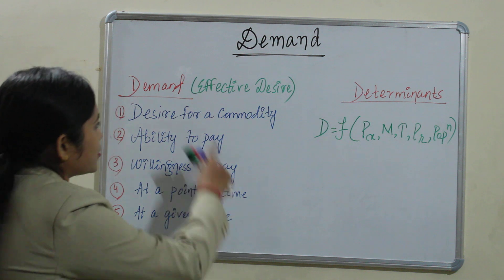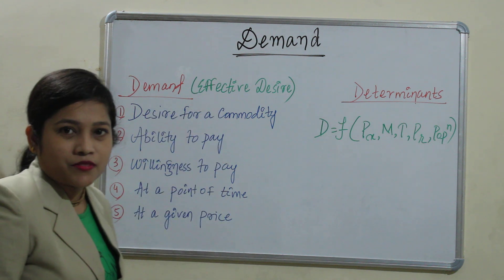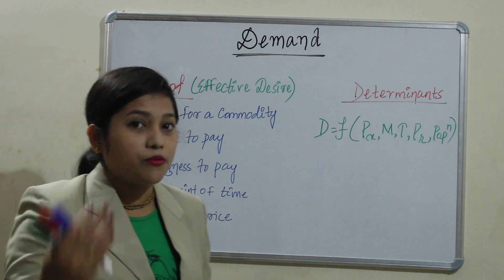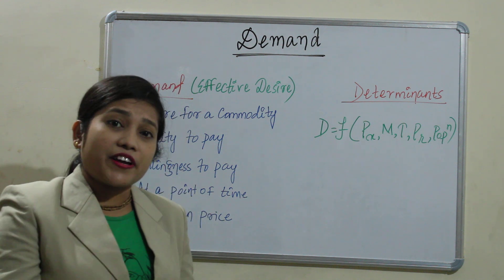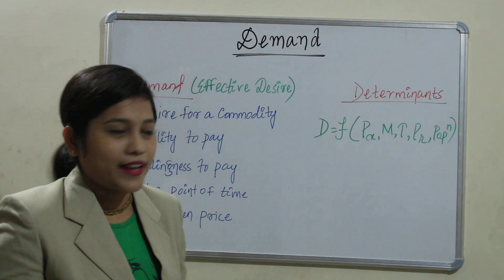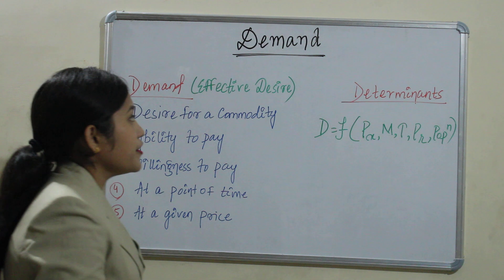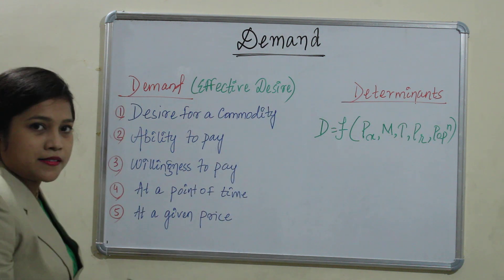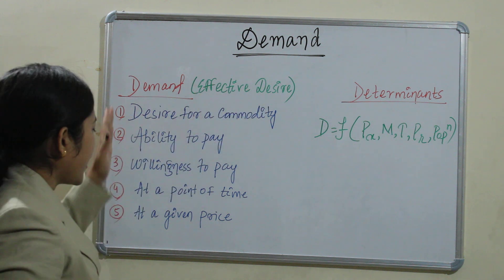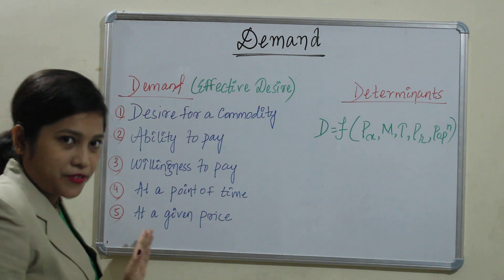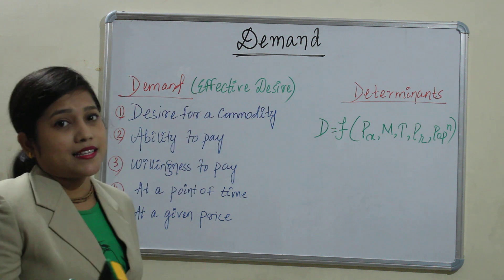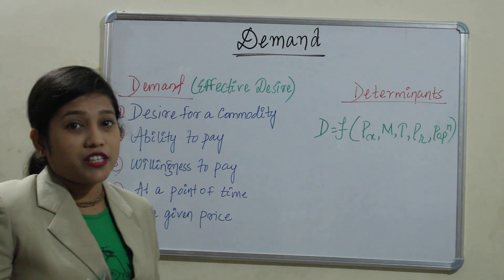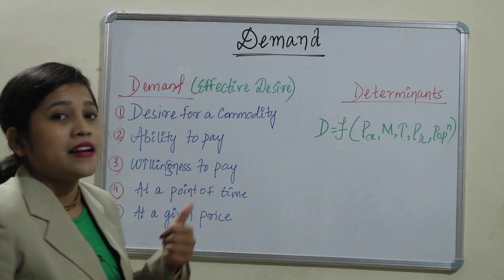Demand is actually the effective desire. What is desire? What we want. But why is it called effective desire? If desire is combined with these five characters, then only that desire can be called effective desire, which we call in economics as demand.